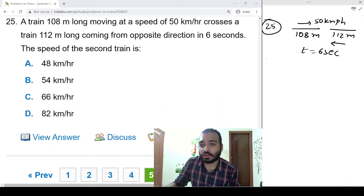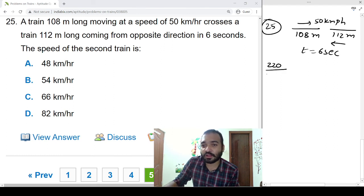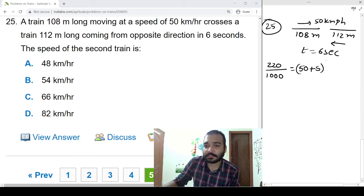So total distance is 108 plus 112, that is equal to 220 meters. Options are in kilometer per hour, so we need to convert into kilometers, so by thousand. Speed is opposite direction, so we need to add. Second train speed is s into time is 6 seconds, 6 by 60 into 60. 10 times 2 zeros, 2 zeros cancel.